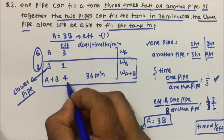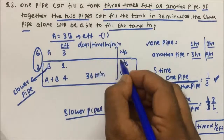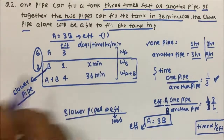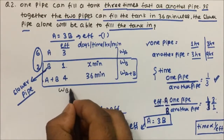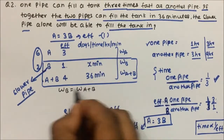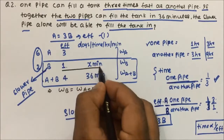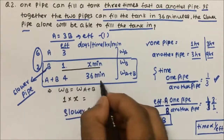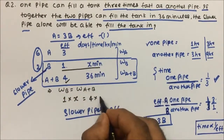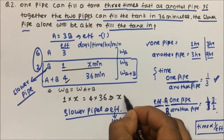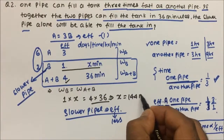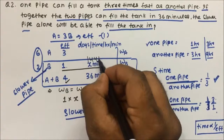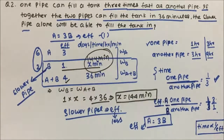We equate work done by B with work done by A+B. Work done by B = 1 × x minutes. Work done by A+B = 4 × 36 minutes. So 1×x = 4×36, giving x = 144 minutes. The slower pipe will take 144 minutes to fill the tank. Thanks for watching the video.